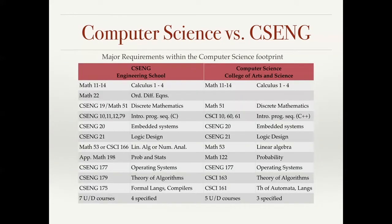If we look at the major requirements for computer science and engineering and the computer science in the College of Arts and Science, just within the computer science footprint, you'll see that the requirements within both majors are nearly identical. Both sets of students take four quarters of calculus. The engineering students take ordinary differential equations, whereas our computer science students don't. Both students take discrete mathematics — it's actually the same course taught in our department, but cross-listed as an engineering class and a math class. The engineering students have a beginning programming sequence taught in C, whereas the computer science students have a beginning programming sequence taught in C++. Both students take CS Engineering 20 and 21.